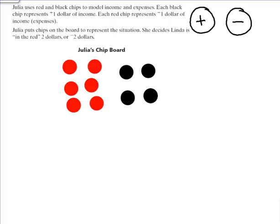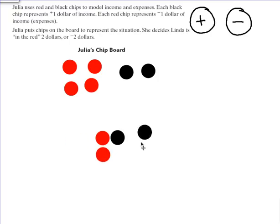Well, if you remembered a zero pair, you remember that we can pair together a positive and a negative chip, and the value of those chips together make zero. One is worth one, the other's worth negative one. Together they're worth zero. And so we're going to create as many zero pairs as we can with Julia's chips.